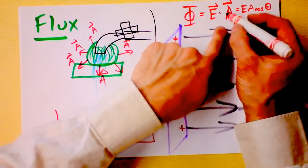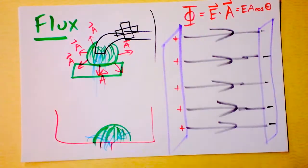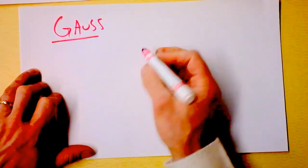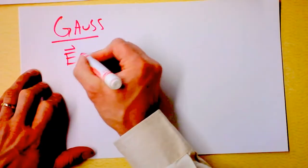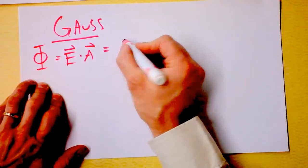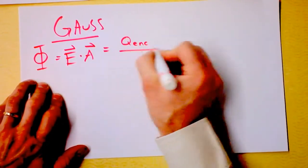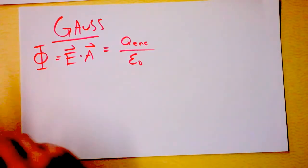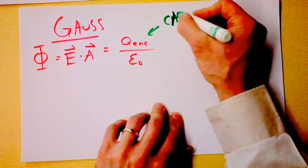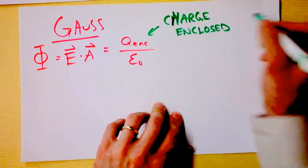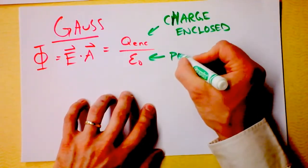Now this is Gauss's law — a fantastic statement. Electric flux is electric field dotted into area, just a definition. But Carl Friedrich Gauss says: electric field dot area — the flux — also equals the charge enclosed inside the flux catcher divided by a constant of the universe. Let's call it the charge enclosed divided by epsilon naught.